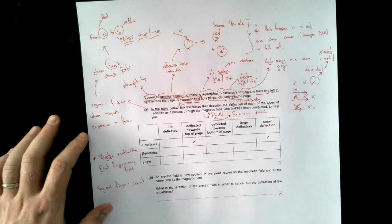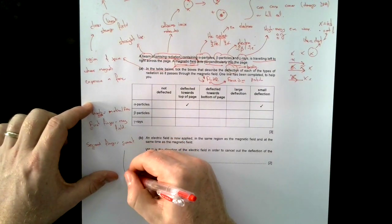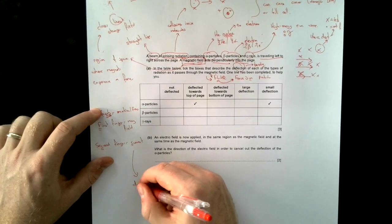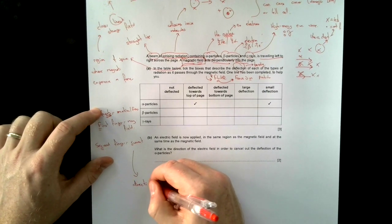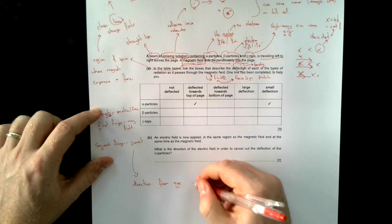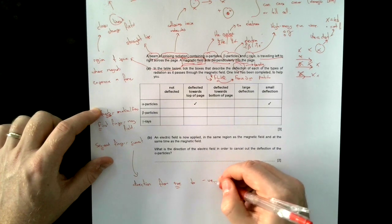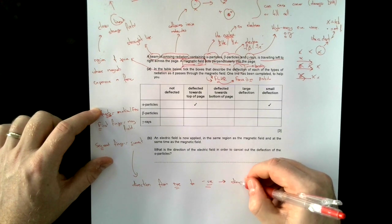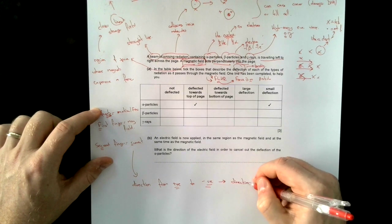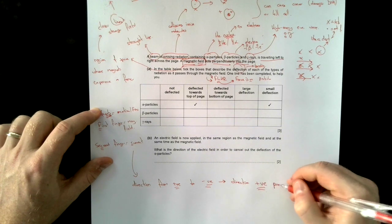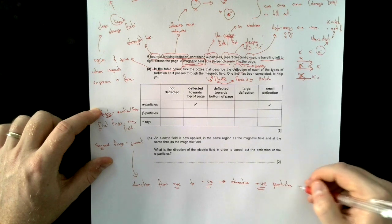Second finger is the current. Now, for this question, it's quite important. When I think about current, I need to remember current is the direction from positive to negative. In other words, it is the direction that positive particles move.